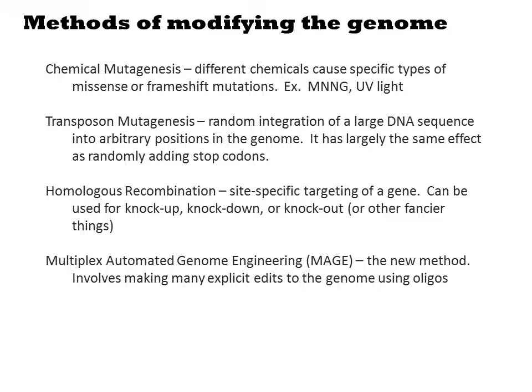It uses the same chemistries as homologous recombination techniques, but you do many such knockouts in parallel and have control over the sequence identity of each modification in the library. It allows you to examine all the combinations of a set of genome edits as a library.